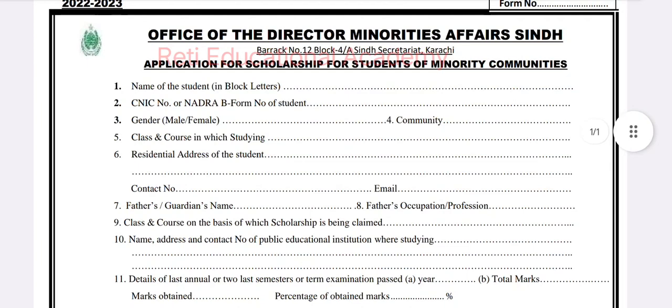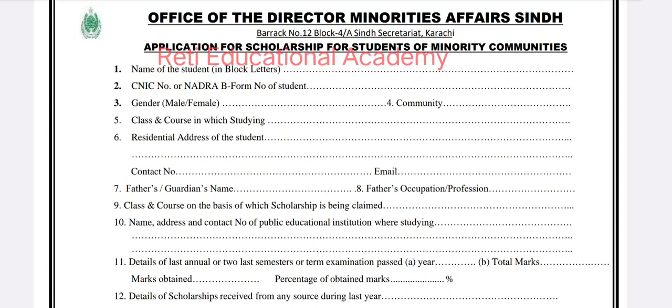Number 1 is the name in block letters or capital letters. Number 2 is the CNIC number. Number 3 is gender, male or female. Number 4 is community, which is Hindu or Christian, and the class and course in which you are studying.